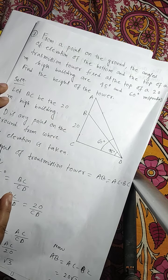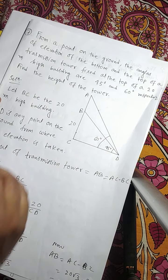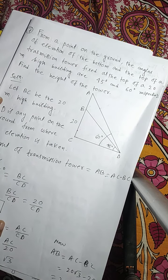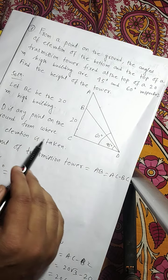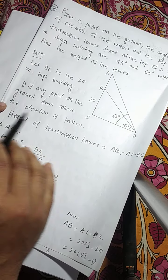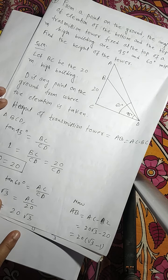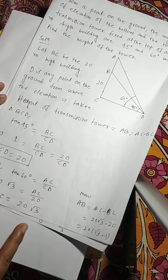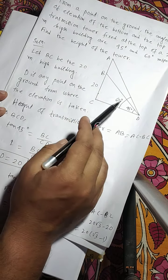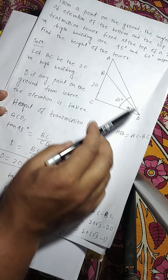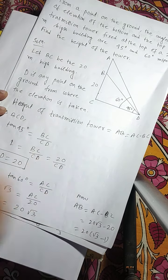Let BC be the 20 meter high building, and let D be a point on the ground from where the elevation is taken. The angle of elevation of the top of the transmission tower, angle ABD, is 60 degrees, and the angle of elevation of the bottom of the tower, angle CBD, is 45 degrees.